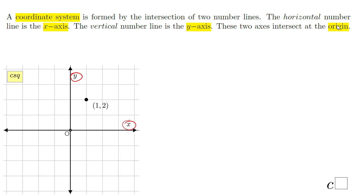Welcome or welcome back at C squared. In this lesson, we're going to talk about the coordinate system. The coordinate system is formed by the intersection of two number lines. The first one is the x-axis and the second one is the y-axis. The x-axis is a horizontal axis and the y-axis is a vertical axis.